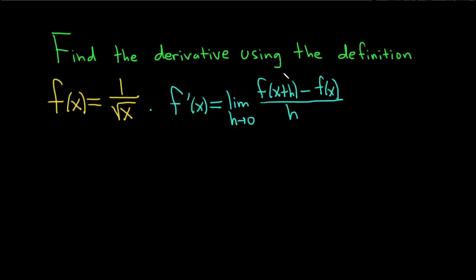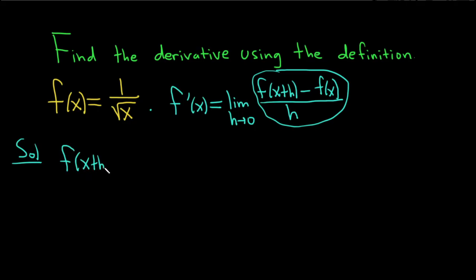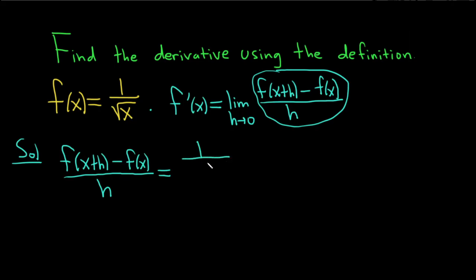We'll start by simplifying the difference quotient, and then at the very end we'll take the limit. So let's write down the difference quotient: f of x plus h minus f of x, all divided by h. Since f of x is 1 over the square root of x, we replace x with x plus h to get 1 over the square root of x plus h, minus 1 over the square root of x, all divided by h.